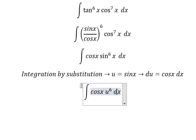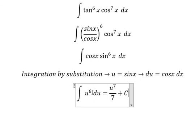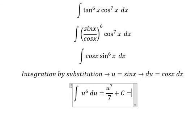Cosine x dx becomes du. We get u to the power of 7 over 7 plus C, where u is sine x.